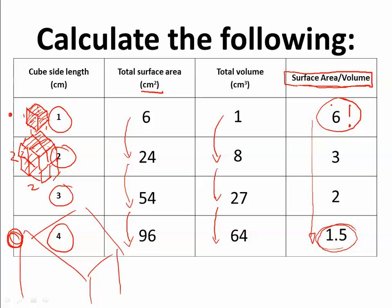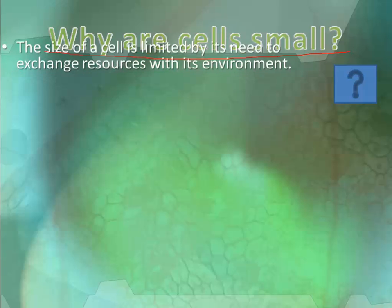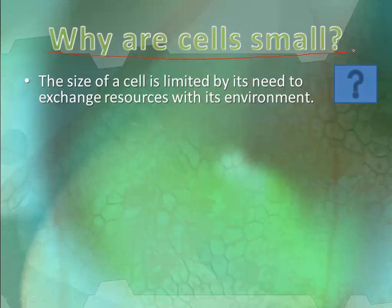Now let's go over the specific language you need to know. Cells are small because it allows life to be much more efficient. The size of a cell is limited by its need to exchange resources with its environment — cells have to be transferring molecules back and forth all the time. Our respiratory and circulatory systems help bring in molecules we need like glucose and oxygen in an efficient manner, and help get rid of molecules like urea and carbon dioxide so they don't build up and poison us.